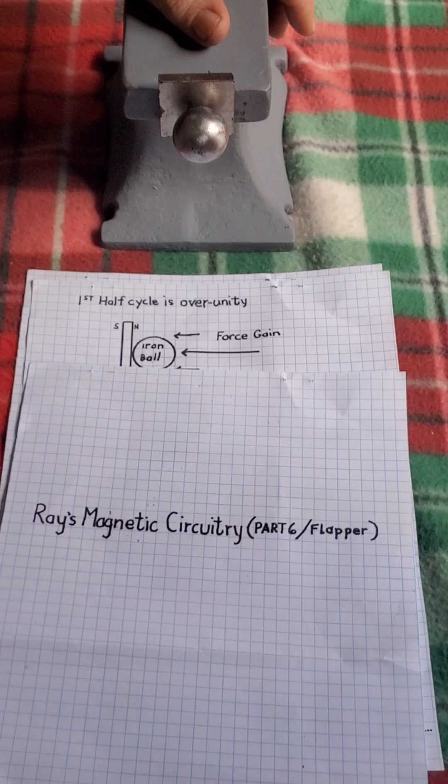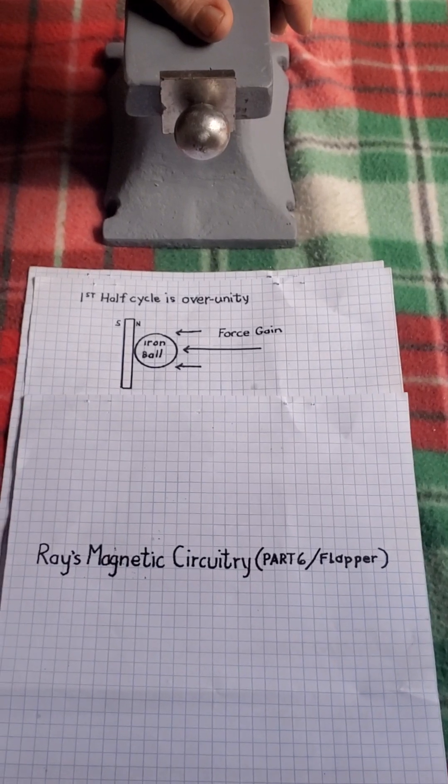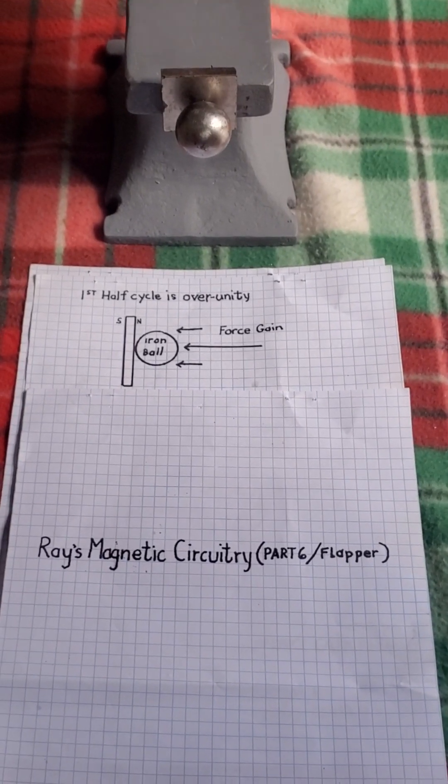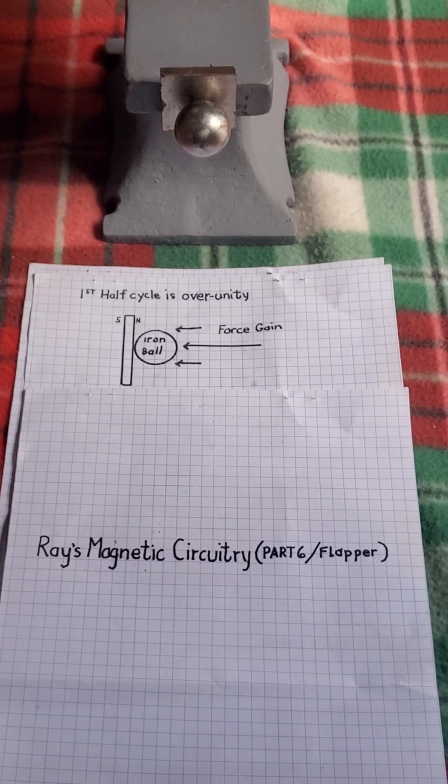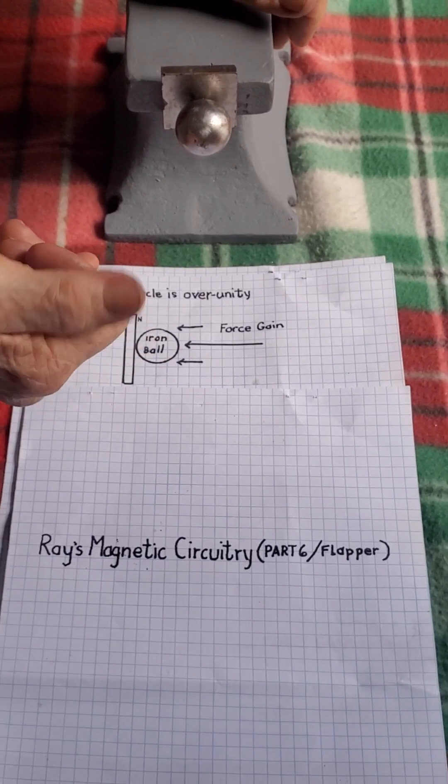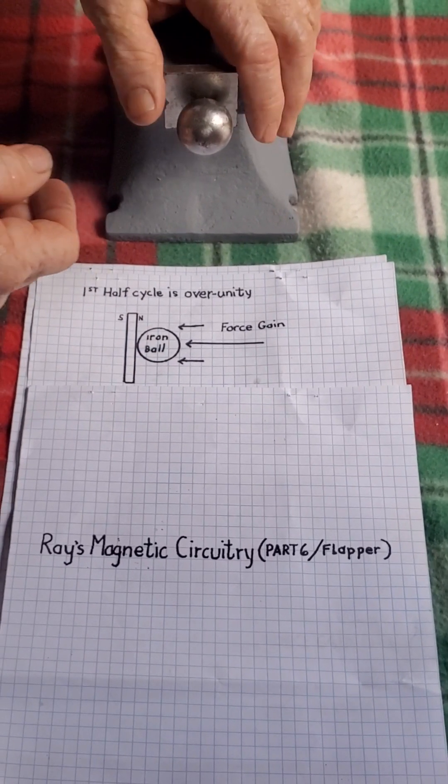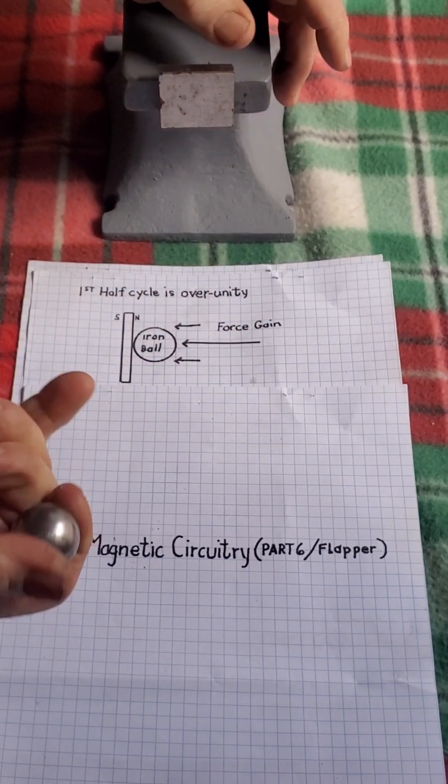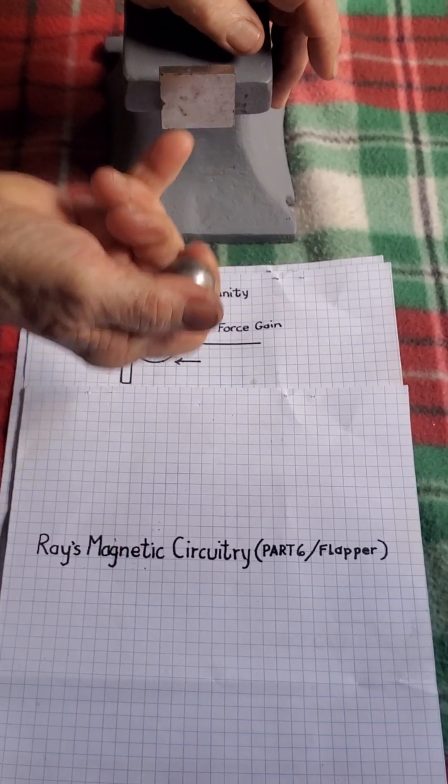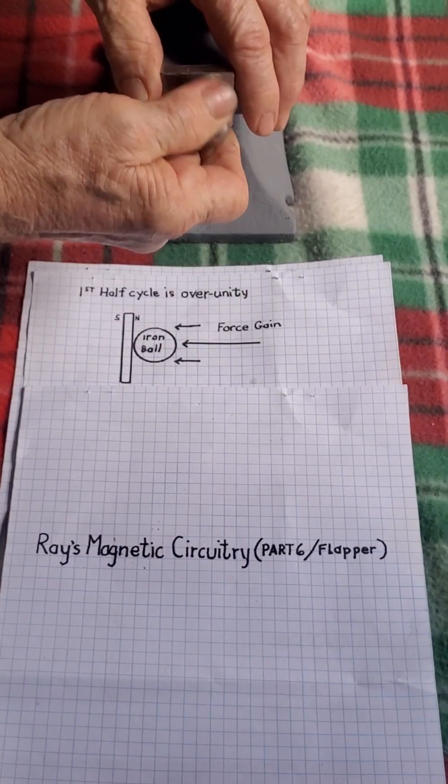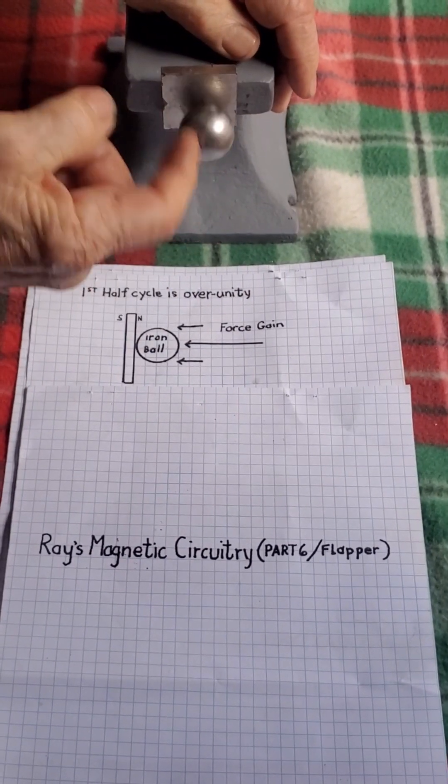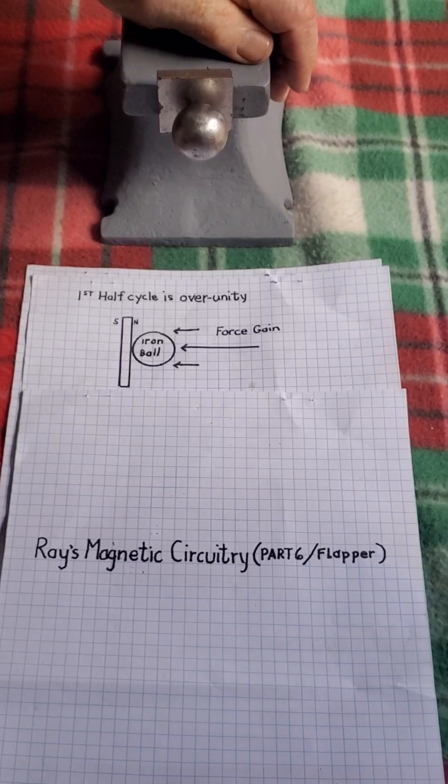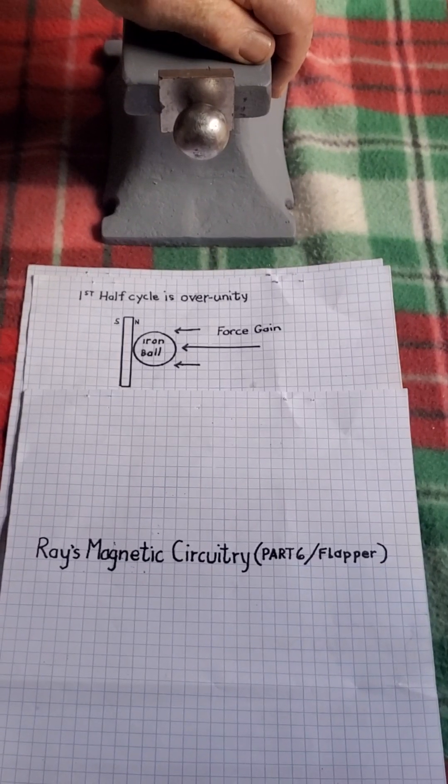I'm breaking down the complete cycle into two halves. The first half cycle is an over-unity event. There is a force gain coming in. I call that the over-unity force gain, the first half.